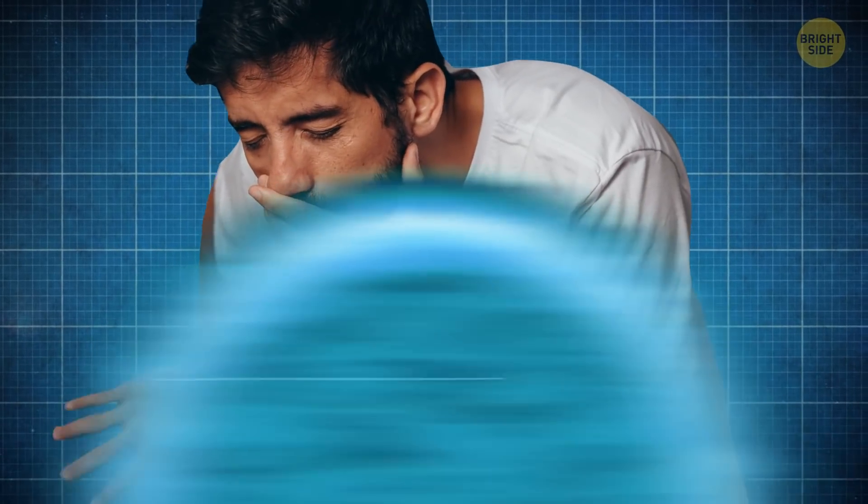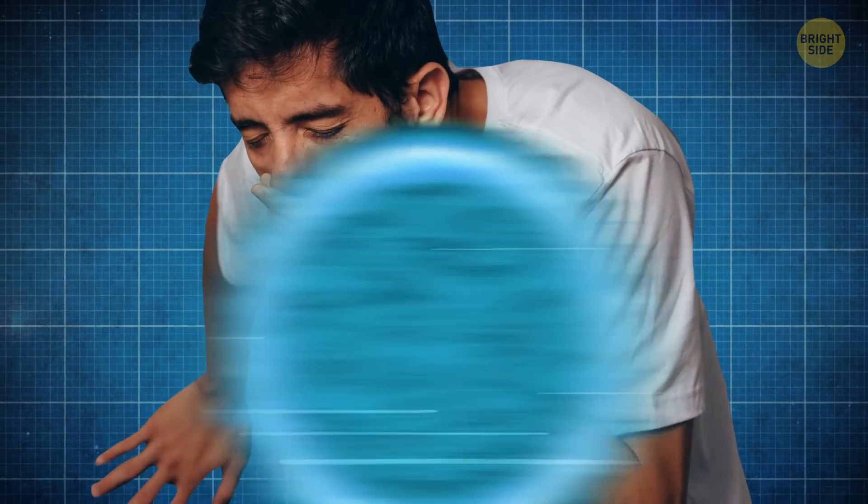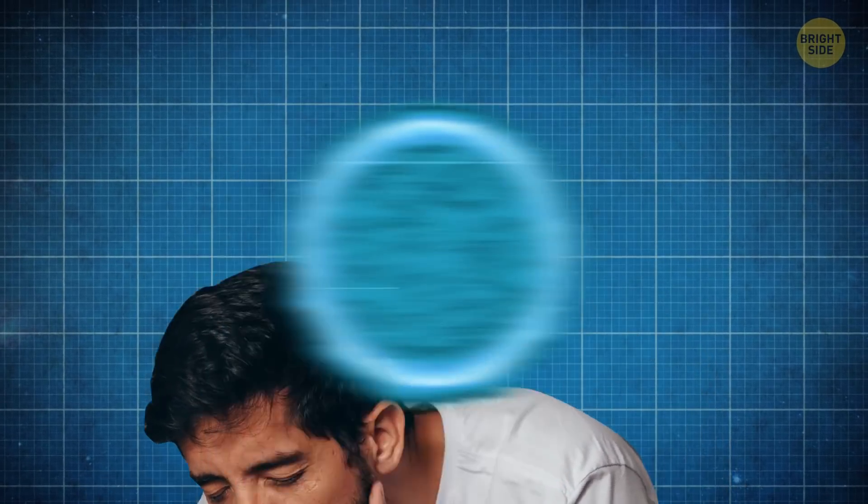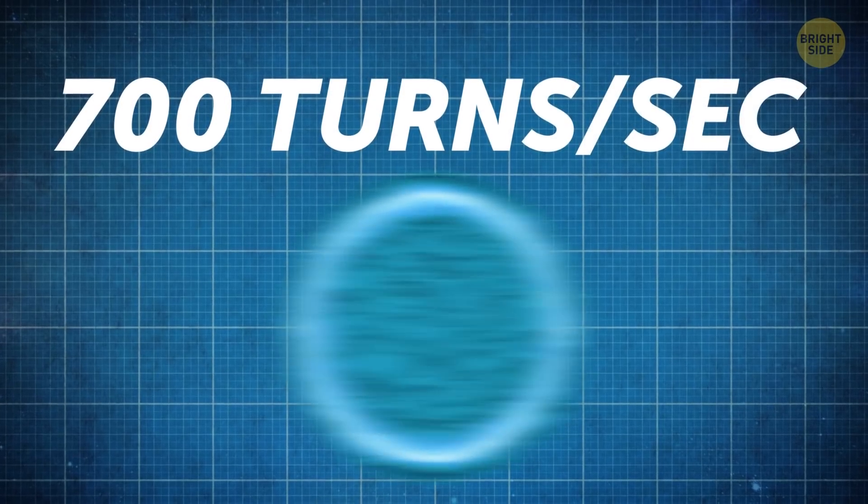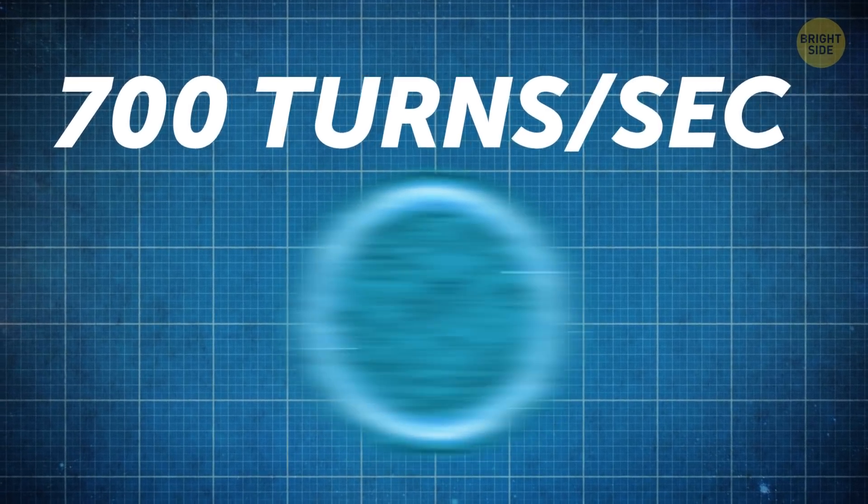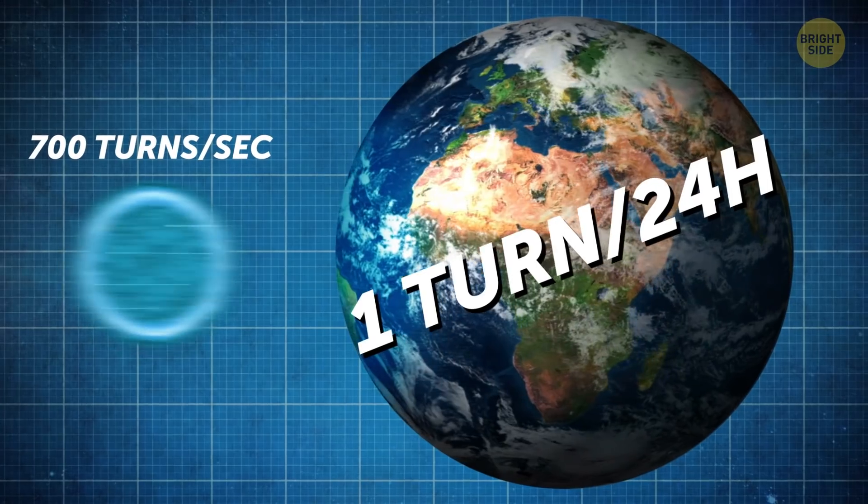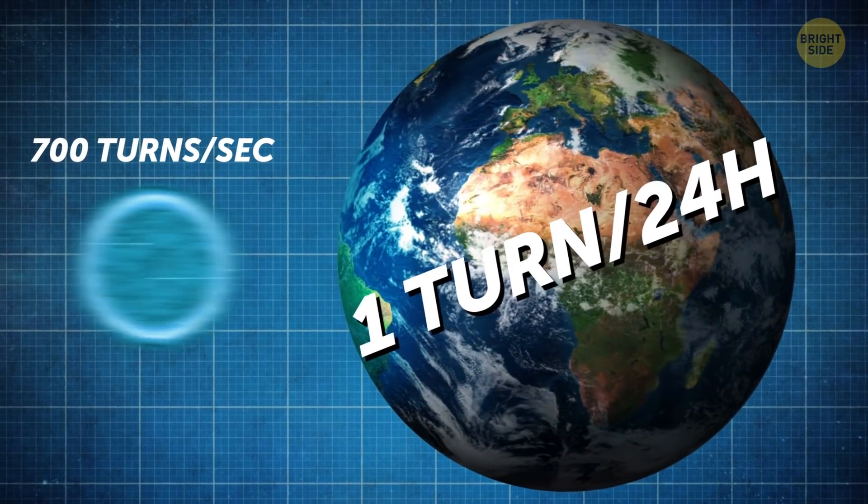Neutron stars also rotate, and they do it so fast your head would spin just as much. The fastest-spinning neutron star scientists know of makes more than 700 turns per second. And here, our entire planet takes a full 24 hours to complete just one rotation.